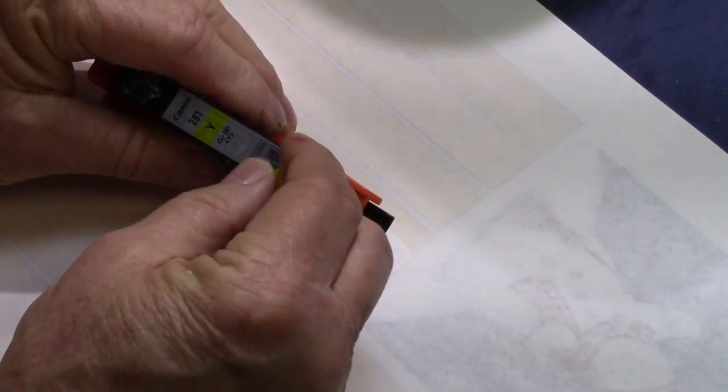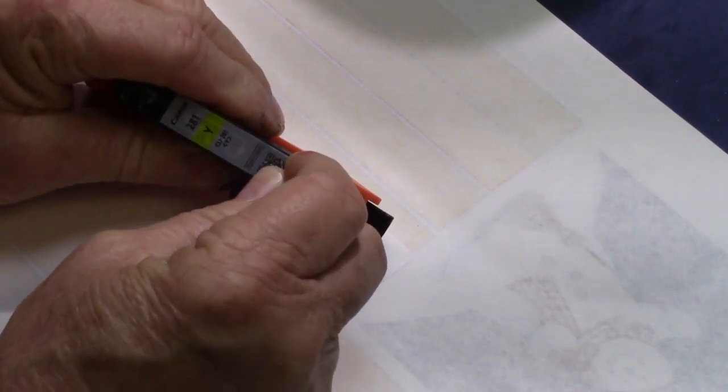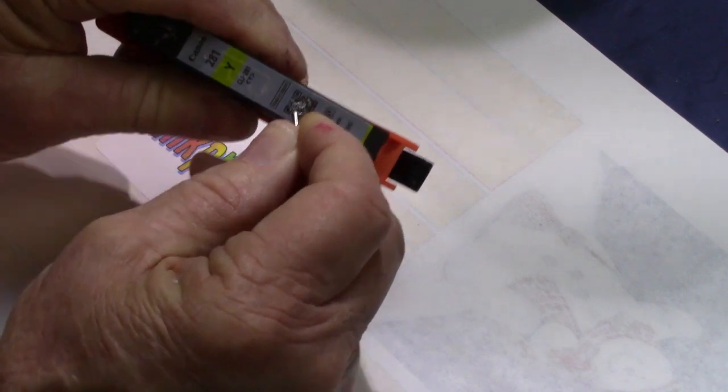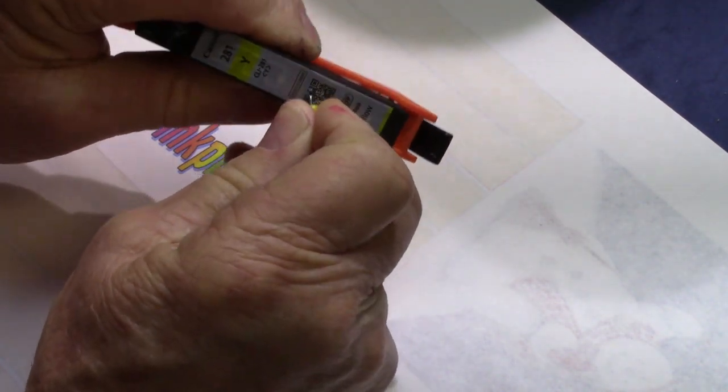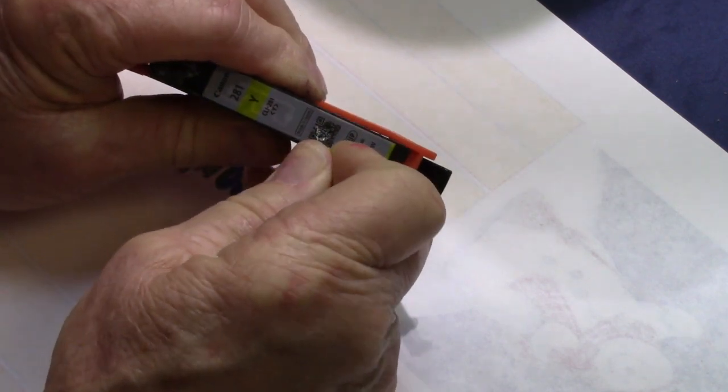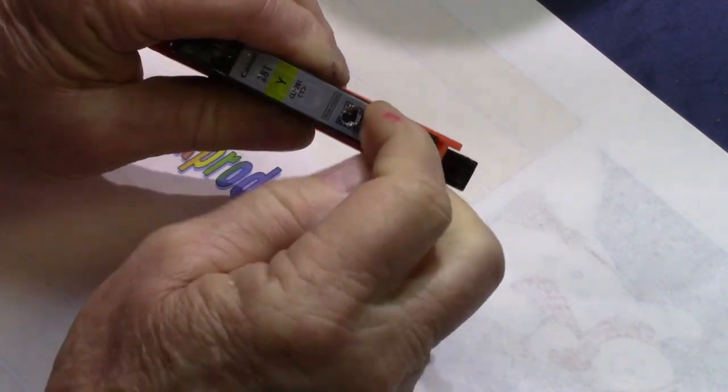So then I take the little stick pin and I'm going to take the label away from that so you can see it. If you use an exacto knife you can probably do it cleaner.